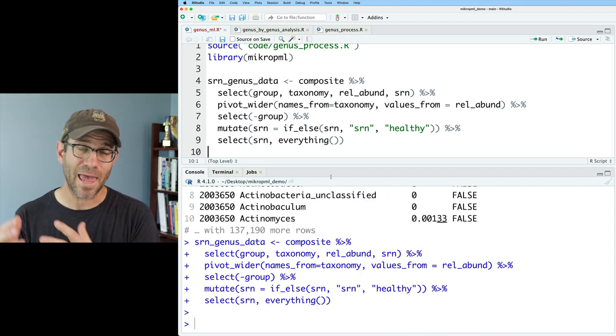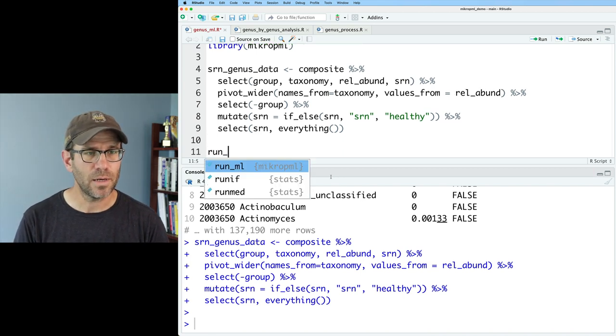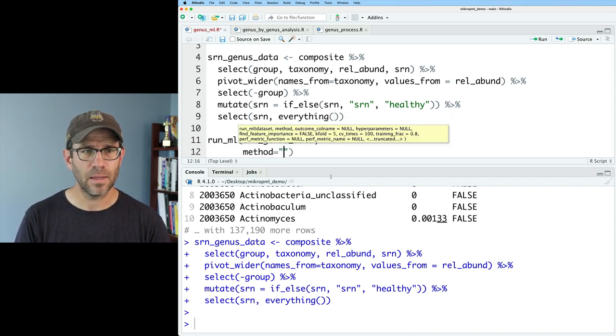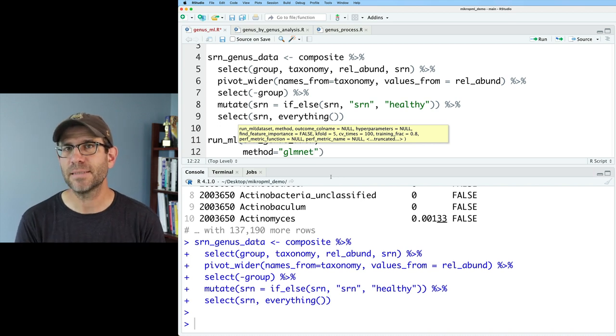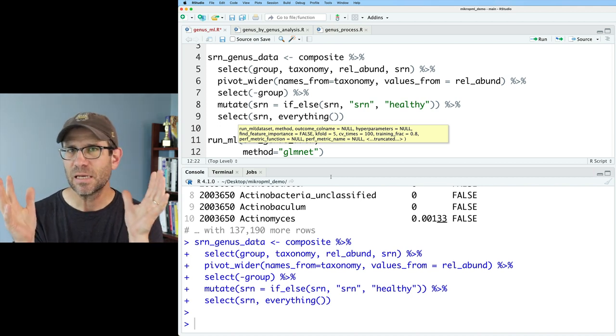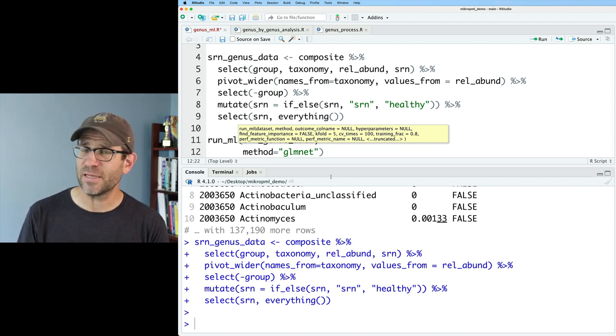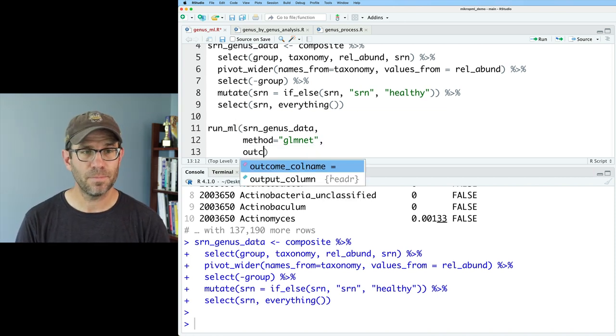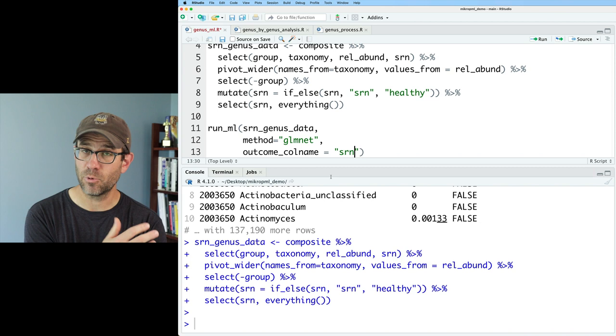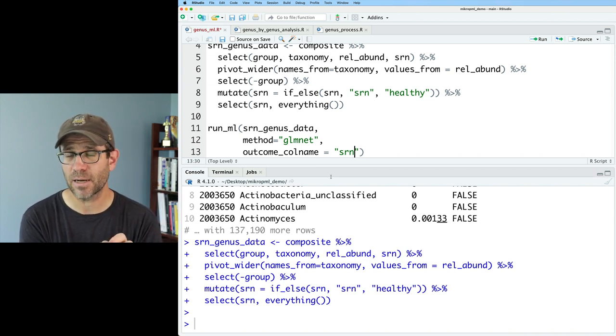One thing that is kind of particular about the machine learning tools is that I can't have true and false as levels for the predicting variable, for the output variable. So I need to rename the values in SRN from true and false to something else. I'll go ahead then and do mutate SRN equals if_else. And because SRN is already logical, if SRN is true, then I'm going to put in quotes SRN. Otherwise, if it's false, I'm going to say healthy. And this again, then gets me healthy and SRN in that SRN column. SRN is already the first column. But I'm going to go ahead and for my own peace of mind, I'm going to use the select function to determine the order of the columns.